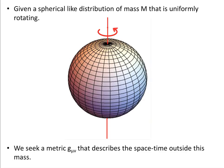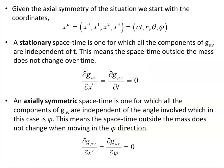Let's say we have a spherical-like distribution of mass that is uniformly rotating, and we seek a metric g_μν that describes the spacetime outside this mass. Given the axial symmetry of the situation we choose to start with the coordinates ct, r, theta, and phi — four dimensions.